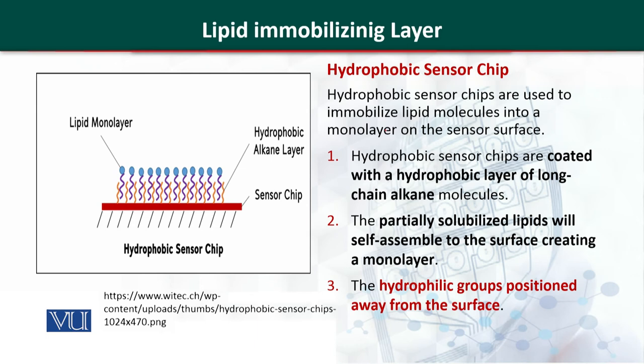In the market, lipid immobilizing chips are available containing the lipid immobilizing layer. These are known as hydrophobic sensor chips. Hydrophobic sensor chips are coated with a layer of long-chain alkane molecules, and on this hydrophobic chain the partially solubilized lipid is attached. As a result, it arranges itself so that polar-to-polar and non-polar-to-non-polar interactions occur — hydrophilic to hydrophilic — and the hydrophobic end remains on top. There is no need for a lipid bilayer; a single layer can arrange itself properly on a hydrophobic chip. These hydrophobic chips are available commercially.